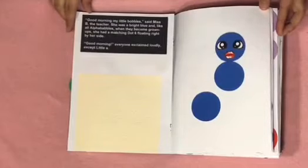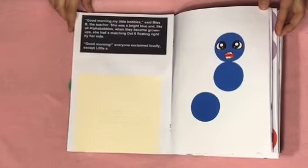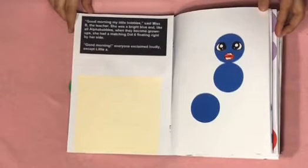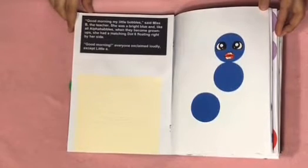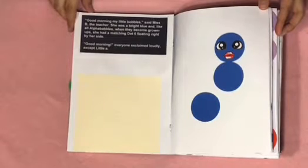Good morning my little baubles said Miss B the teacher. She was bright blue and like all alpha baubles when they become grown-ups she had a matching dot six floating right by her side. Good morning everyone exclaimed loudly except Little A.